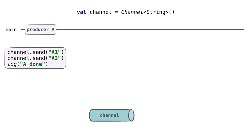Let's discuss what the producers and consumer do. We start the first coroutine, producer A. It's going to send two values to the channel and then report that it's done. It sends the first value, the string A1, to the channel. Because we don't pass any argument to it, it's a rendezvous channel — it doesn't have any buffer. Whenever there are both send and receive calls, the value gets sent. Otherwise, one of the calls gets suspended.